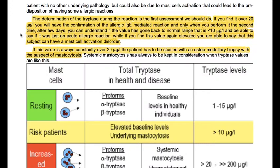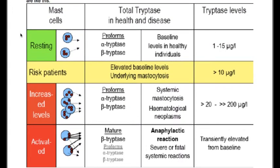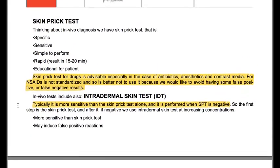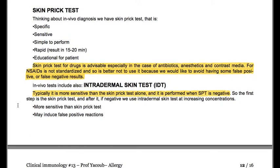Systemic mastocytosis is always to be kept in consideration when tryptase values are persistently elevated. Risk patients are those with elevated baseline levels suggesting underlying mastocytosis, with tryptase levels more than 10 micrograms per liter. Skin prick test: it is specific, sensitive, simple to perform, gives rapid results in 15–20 minutes, and is educational for the patient.